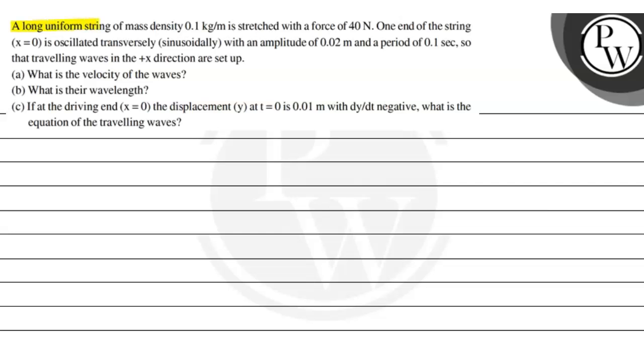The question says a long uniform string of mass density 0.1 kg per meter is stretched with a force of 40 N. One end of the string x equals 0 is oscillated transversely sinusoidally with an amplitude of 0.02 meter and a period of 0.1 second so that traveling waves in the plus x direction are set up.